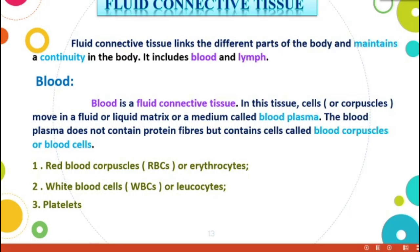It contains several corpuscles. The blood plasma does not contain protein fibers, but contains cells called blood corpuscles or blood cells. There are three types: first, RBC or erythrocytes; second, WBC or leukocytes; third, platelets.